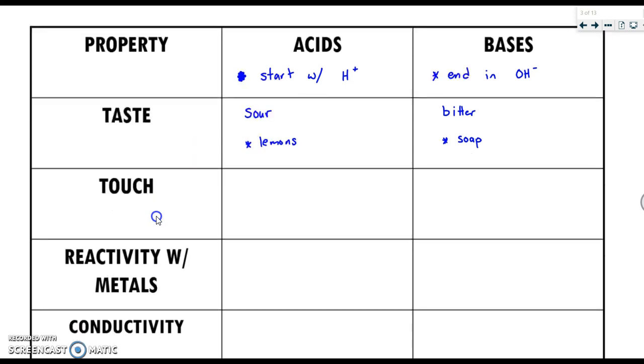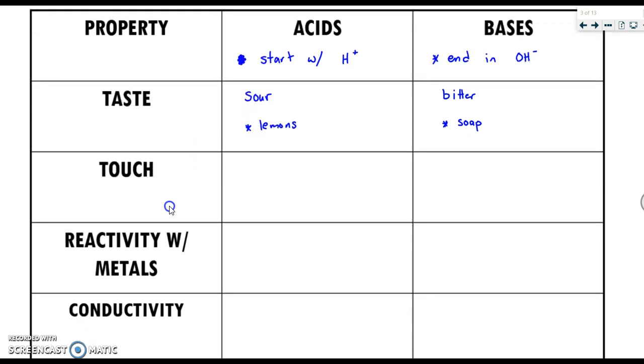Touch. When a strong acid gets on your skin, at first it's going to feel somewhat warm and then it's going to burn. When a base gets on your skin, at first it is very slippery feeling. And again, strong bases. And then after it's very slippery, it can burn.